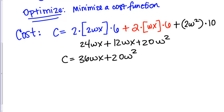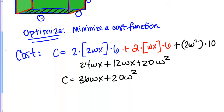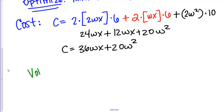Now we've written the equation we want to optimize. The next step is to identify the constraint equation. There's always some additional information in optimization problems that allows you to write a constraint. Here, we're building a rectangular storage container that must have a volume of 10 cubic meters. That's a constraint — we're not building just any container. We have to incorporate that information into our work, and we want the volume to equal 10 cubic meters.